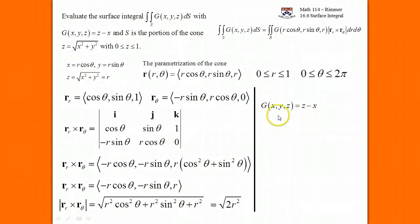Let's rewrite G. G is equal to z minus x, and z is r and x is r cosine theta. So that's what G is. We have r root 2 for the magnitude of r_r cross r_theta. Now we're ready. We have G rewritten. We have the magnitude of the cross product here. We multiply these together. We have the bounds on r. We'll have a simple double integral to calculate.